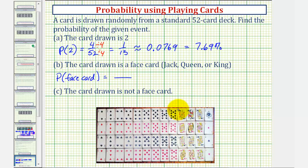Again, the face cards are here. The jacks, queens, and kings. There are 12 face cards. So the probability of a face card would be 12 divided by 52.